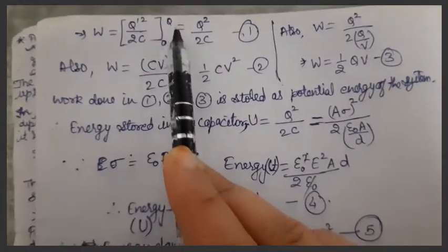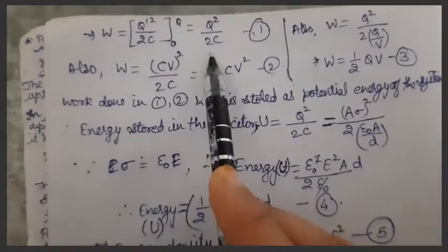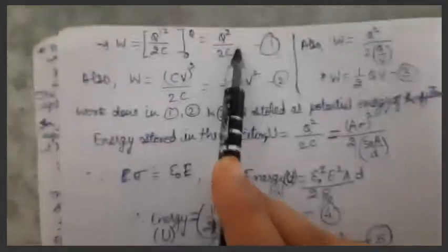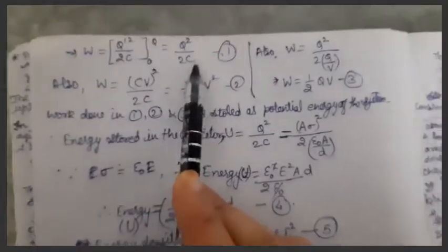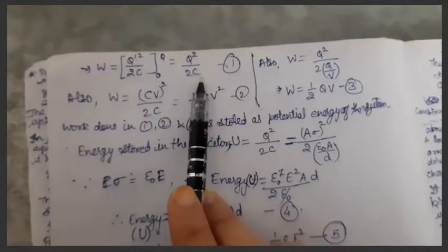If we put the limits, upper limit q, we get q square by 2c, minus lower limit 0, which is 0. So overall, the value of work done in building up charge from 0 to q is q square by 2c.